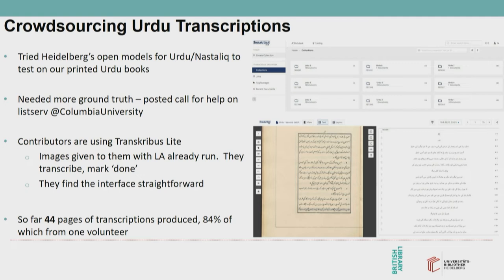We're using Transkribus Lite to run this exercise. We have assigned one collection per volunteer for transcription, so that each volunteer is not tempted to work on someone else's material. We do the baseline detection ourselves, and then the volunteers simply transcribe and mark pages as done when finished. Early feedback from volunteers is that they find the Transkribus Lite interface extremely straightforward with no technical difficulties — questions are normally around transcription conventions. The majority of work has been done by one person; they've created 44 pages, and we're nearly at the point of training our first model to get a baseline understanding of accuracy.